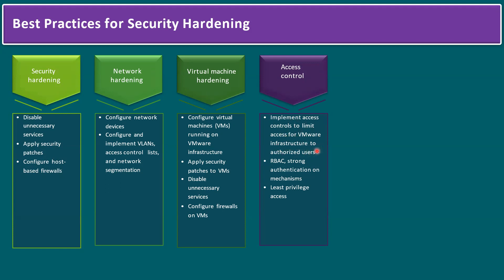Access control is another best practice: implement access controls to limit VMware infrastructure access to authorized users only. Within vCenter there are different types of roles — typically only vSphere administrators hold the Administrator role. For all tenants and application users, separate accounts with limited privileges should be created without full admin permissions. Key principles include role-based access control, strong authentication mechanisms, and least-privileged access.